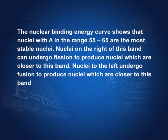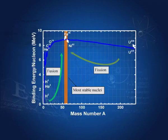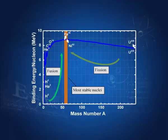Now we plot the binding energy per nucleon against the mass number. In this graph, mass number goes from 0 to about 250. The binding energy per nucleon is maximum in the band of mass numbers from about 55 to 65 — this is the region of the most stable nuclei. Nuclei on either side of this band, where the binding energy is decreasing, are less stable.